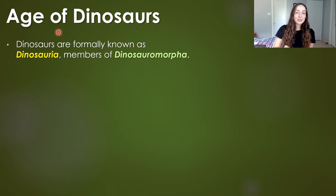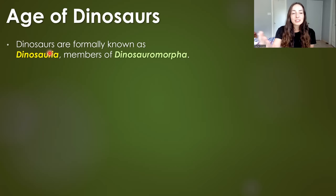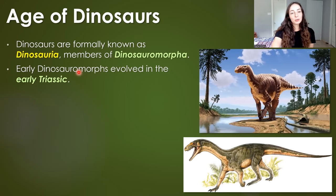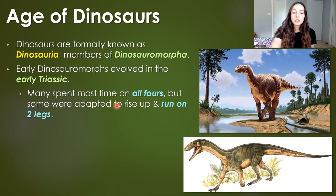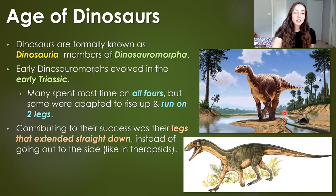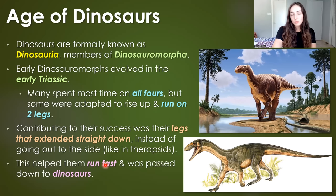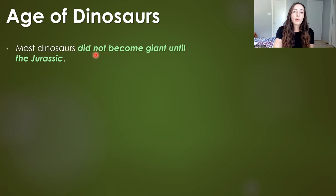You have to admit it is the age of dinosaurs. Dinosaurs are formally known as Dinosauria — that clade of organisms — and these are members of Dinosauromorpha. Early Dinosauromorphs evolved in the early Triassic, many spent most time on all fours, but some were adapted to rise up and walk on two legs. Something that contributed to their success was their legs extending straight down instead of slightly out to the side like in therapsids, helping them run faster. Many Triassic dinosaurs remained relatively small.